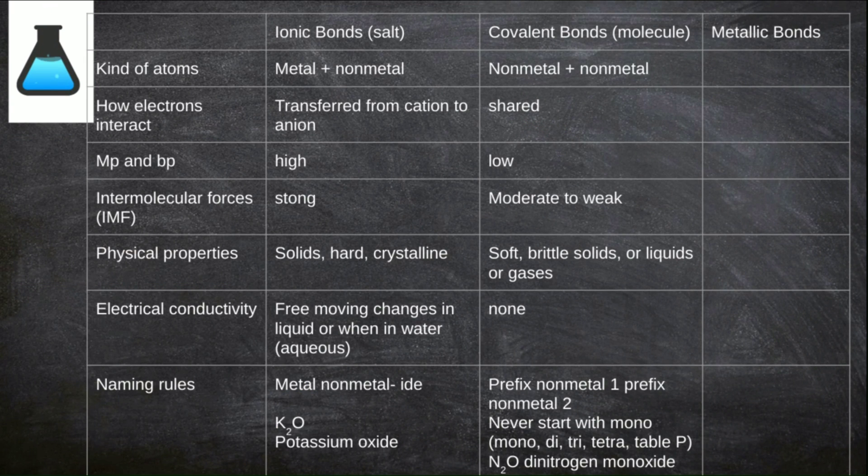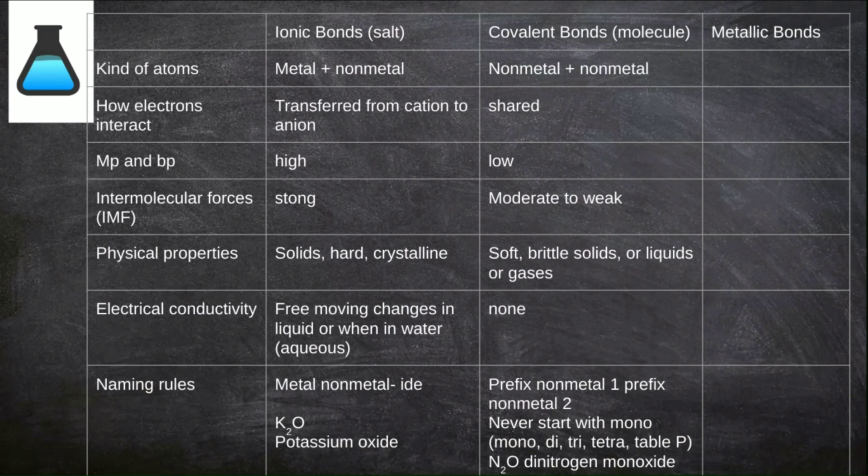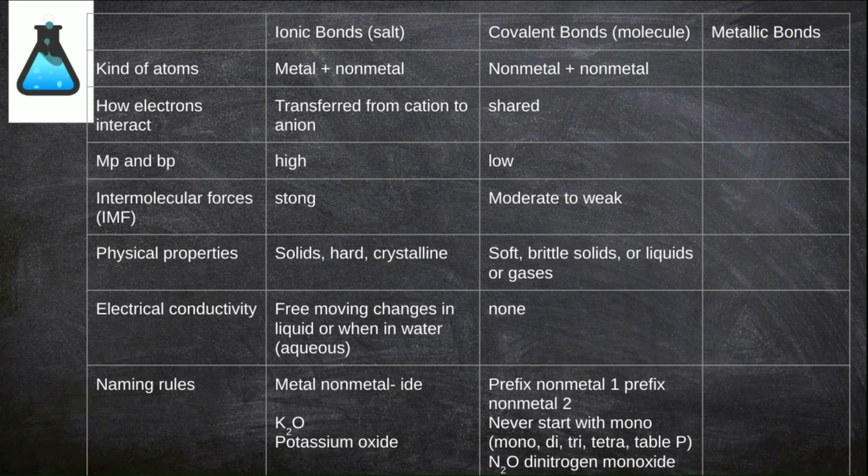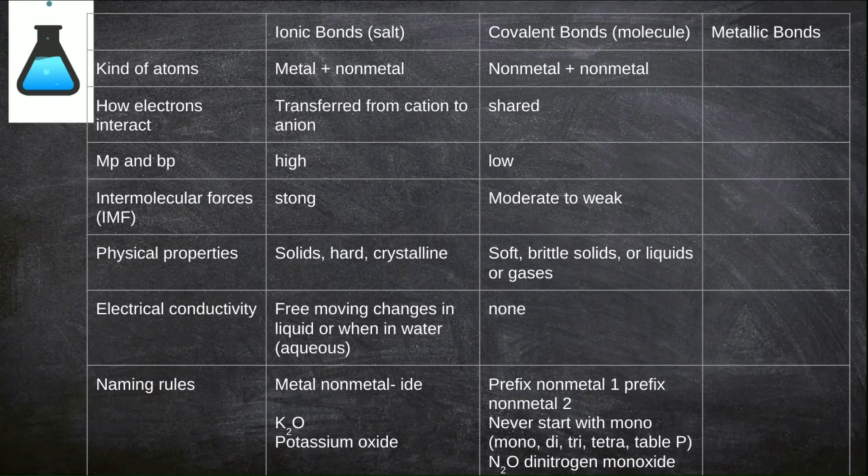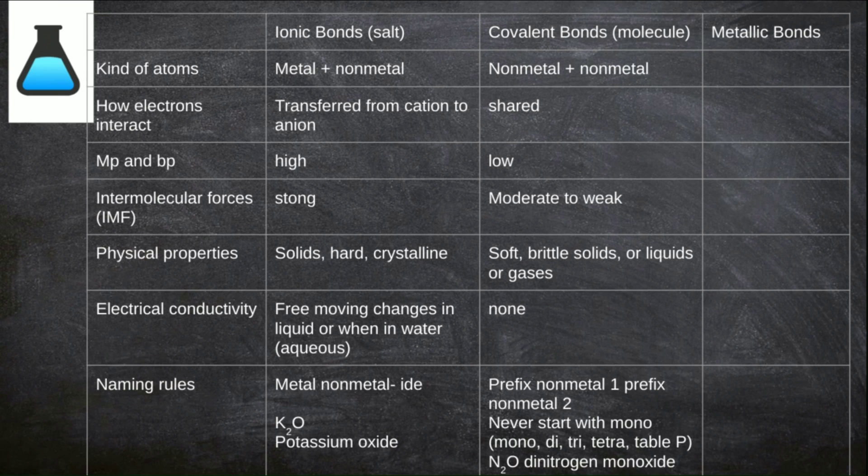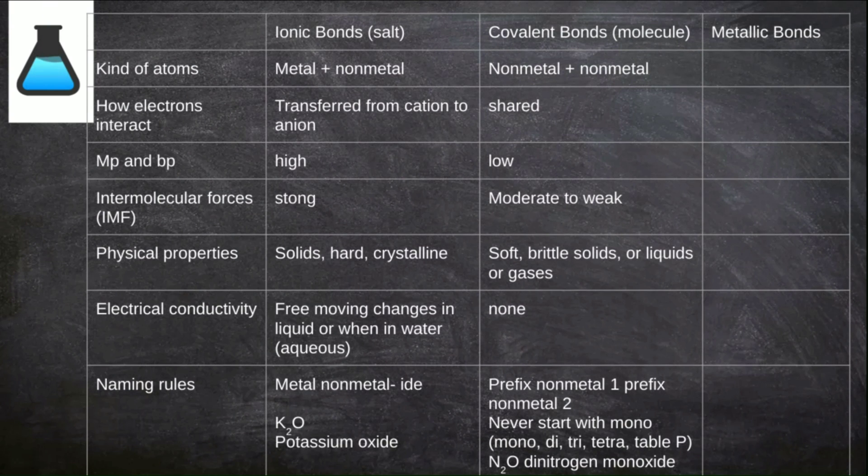Here's a chart that you should pause the video and copy down. This chart looks at the properties of the major types of bonds. Notice that today we only discussed two of the three types of bonds. We'll discuss the third type of bond later. The reason why we only discussed ionic and covalent bonds is that these are the only types of bonds found in compounds. There's a lot of information in this table. We will revisit this information several times throughout the year in different units. But it's a good idea to copy down this chart so that you have a foundation to build your learning on throughout the year.